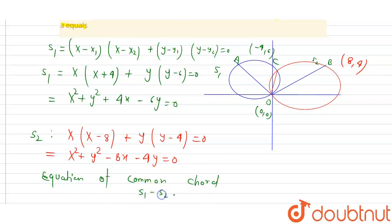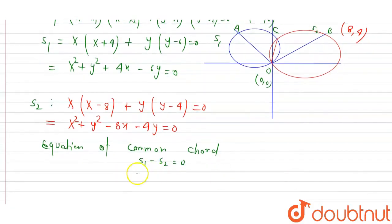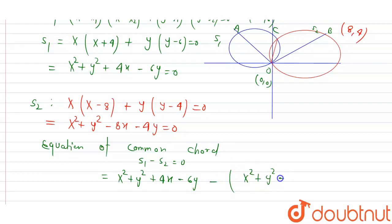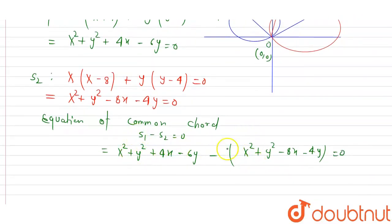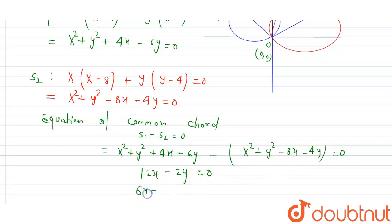The equation of the common chord is S1 minus S2 equal to 0. S1 is x squared plus y squared plus 4x minus 6y, minus (x squared plus y squared minus 8x minus 4y) equal to 0. Here x squared cancels, y squared cancels, giving 4x plus 8x equals 12x, and minus 6y plus 4y equals minus 2y equal to 0.